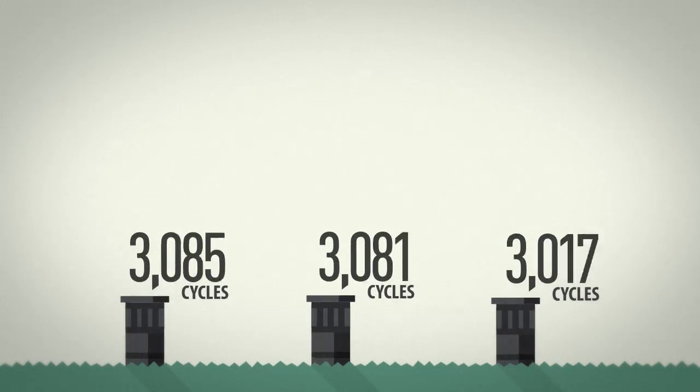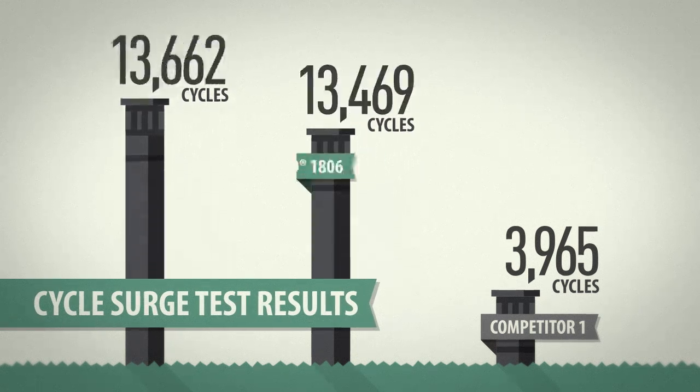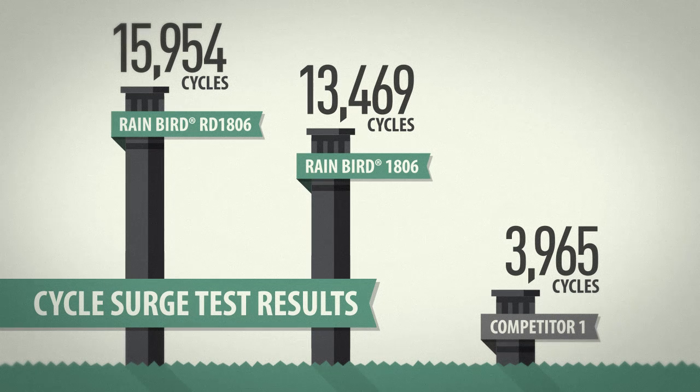In comparison testing, competitive sprays broke after 4,000 cycles, with Rain Bird models lasting three to four times longer.